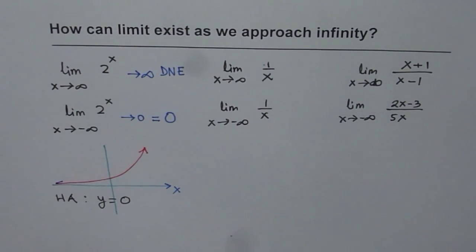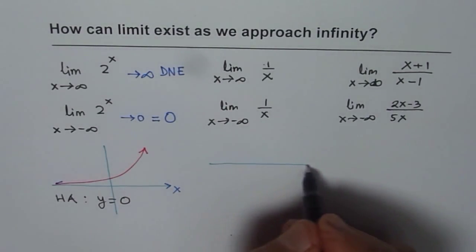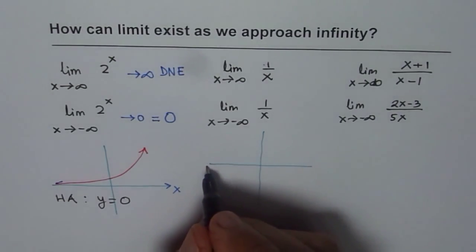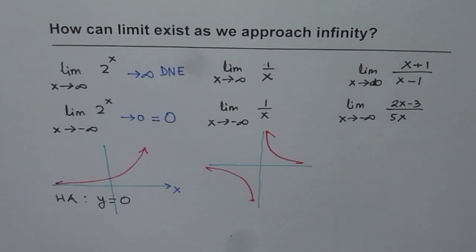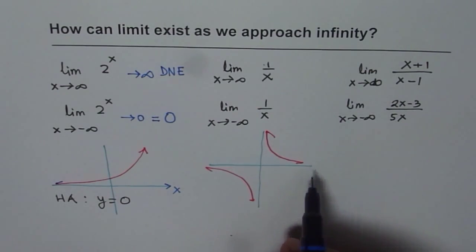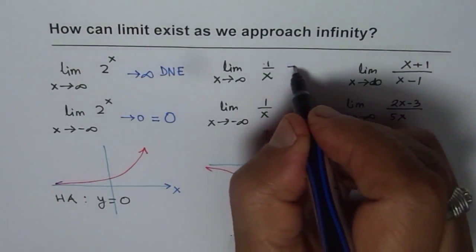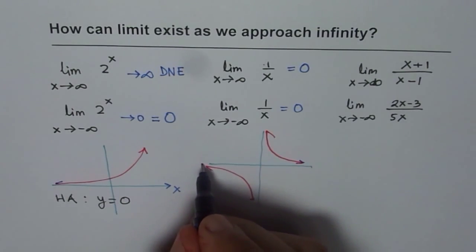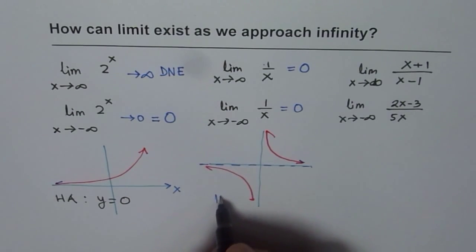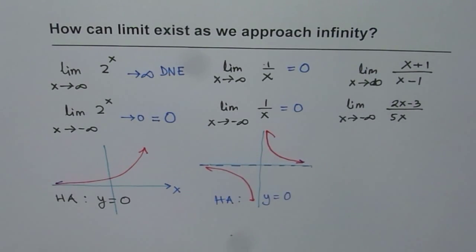Let's take example number 2: the reciprocal function 1 over x. From the graph, it is very clear that as x approaches positive infinity, the value of the function approaches 0, so this limit equals 0. As x approaches negative infinity, this value is also 0. You also notice that it has a horizontal asymptote, and the equation of that horizontal asymptote is y equals 0. This shows that if the limit exists as the function approaches positive or negative infinity, there is a horizontal asymptote, and the value of the limit equals the equation of the horizontal asymptote.